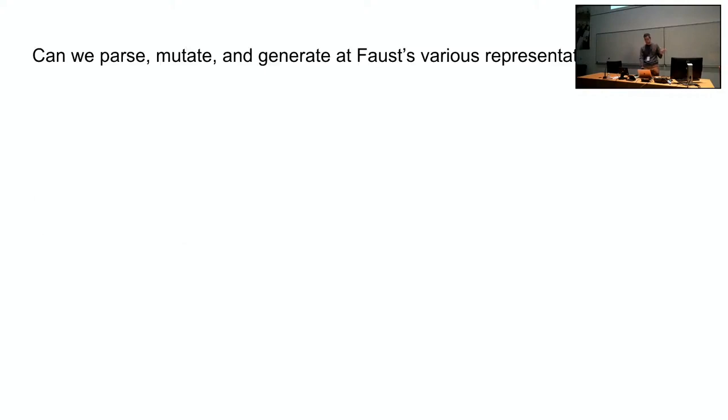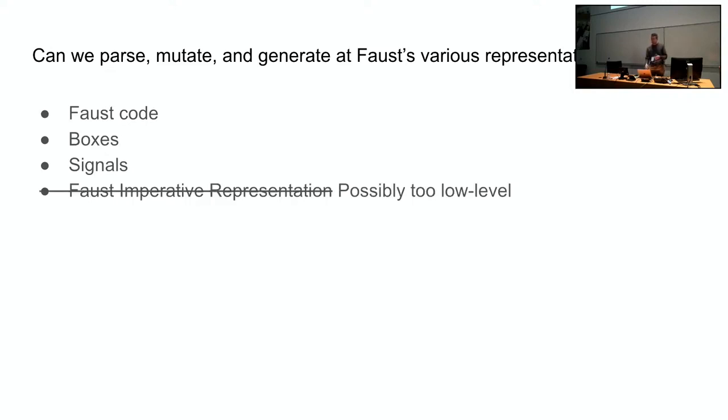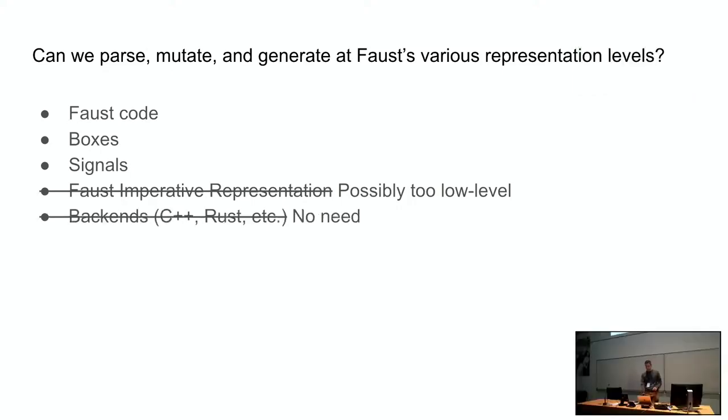So the latter topic is program synthesis. The question is can we parse, mutate, and generate at Faust various representation levels? Those representation levels are Faust code, which we're familiar with and write pretty often, I hope, and boxes, which is a new API that was opened up about two years ago, I think, to the public in C++. And there's also a signal representation. After that, there's Faust imperative representation. But my personal opinion is that this is possibly too low-level for machine learning. You wouldn't want to manipulate this level because it's just too low-level and not abstract enough to come up with useful kind of mutations. And similarly, the back-end level, I don't think is relevant for our interests because it's a totally different language representation. So we're kind of audio DSL engineers. And once you turn it into C++ or Rust or any other programming language, it's no longer in audio DSL. So it's a little less appealing.